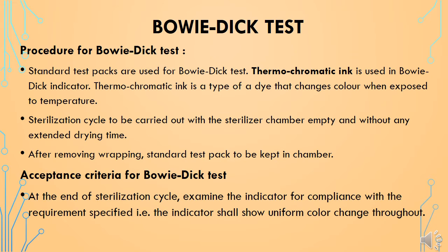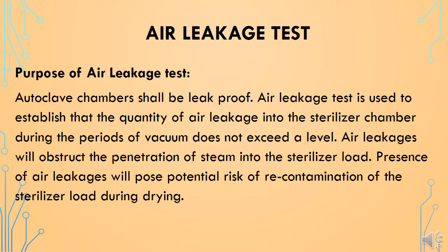For the Bowie-Dick test procedure, standard test packs are used. Thermochromatic ink is used for the Bowie-Dick indicator — this is a type of dye that changes color when exposed to temperature. The sterilization cycle is carried out with an empty chamber and without any extended drying time. After removing the wrapping, the standard test packs are kept in the chamber. The acceptance criteria is that after the end of the sterilization cycle, an even or throughout color change of the indicator should be observed.